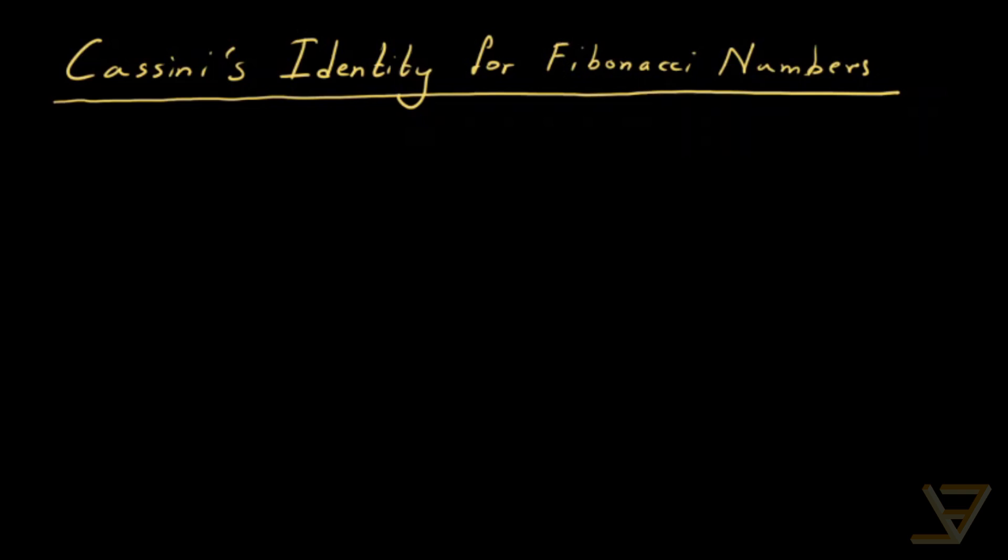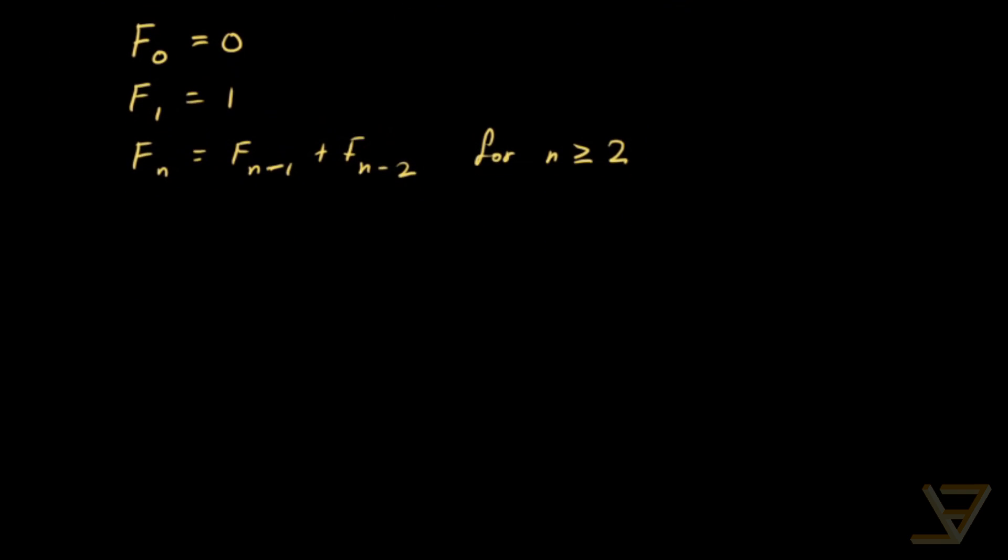Recall that the Fibonacci numbers are defined recursively as follows: F0 equals 0, F1 equals 1, and Fn equals Fn-1 plus Fn-2 for n greater than or equal to 2. So we define the first couple of them concretely, and the rest we can define recursively.